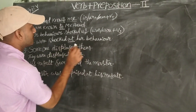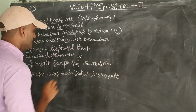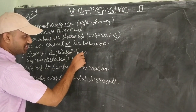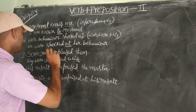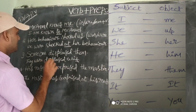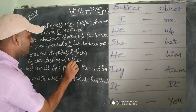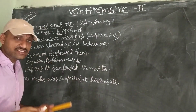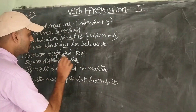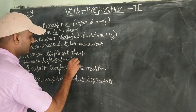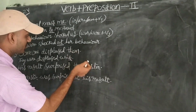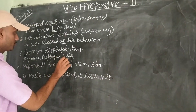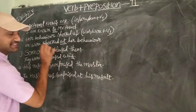Someone displeased with them. 'Them' refers to 'they' — the subjective form of 'them' is 'they.' So: They were displeased with. Who is 'someone'? Since we don't have any clarity there, no need to mention 'by someone.' So the passive form is: they were displeased with.